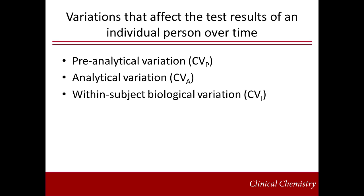The test results of an individual person vary over time due to three factors: preanalytical variation (CVP), analytical variation (CVA), and within-subject biological variation (CVI). Preanalytical variation is influenced by preparation of the individual for sample collection, the collection itself, and conditions the sample experiences after collection. Analytical variation is the imprecision of the measurement. Within-subject variation is the random fluctuation around a homeostatic point.